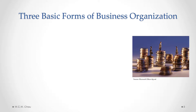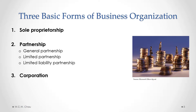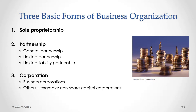In this module, we will look at the three basic forms of business organization. The most basic one is the sole proprietorship, and then we'll look at the partnership and the various different types: the general partnership, the limited partnership, and the limited liability partnership. The last form we'll look at is the corporation — specifically business corporations, not non-share capital corporations used by not-for-profit or charitable organizations.